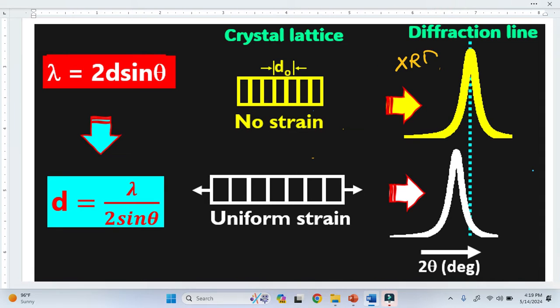In XRD patterns, peak shift occurs due to many reasons. For example, due to crystallite size, due to doping phenomena, due to thermal annealing, as well as strain existing in a material.